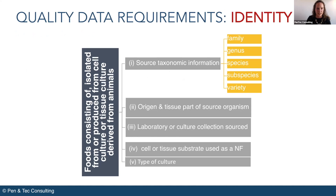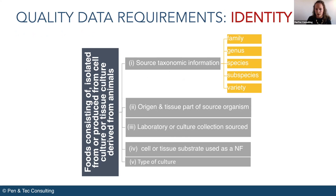So the first item on the list of quality data requirements is the identity of the product. It is very important here to provide as many details as possible, because this information will be a solid basis for the later safety evaluation of the product. We will need to provide information on the source organism, its taxonomic information, origin, and the tissue that the cell was sampled from, laboratory or culture collection sourced, the cell or tissue substrate used as a novel food, and the type of the culture.